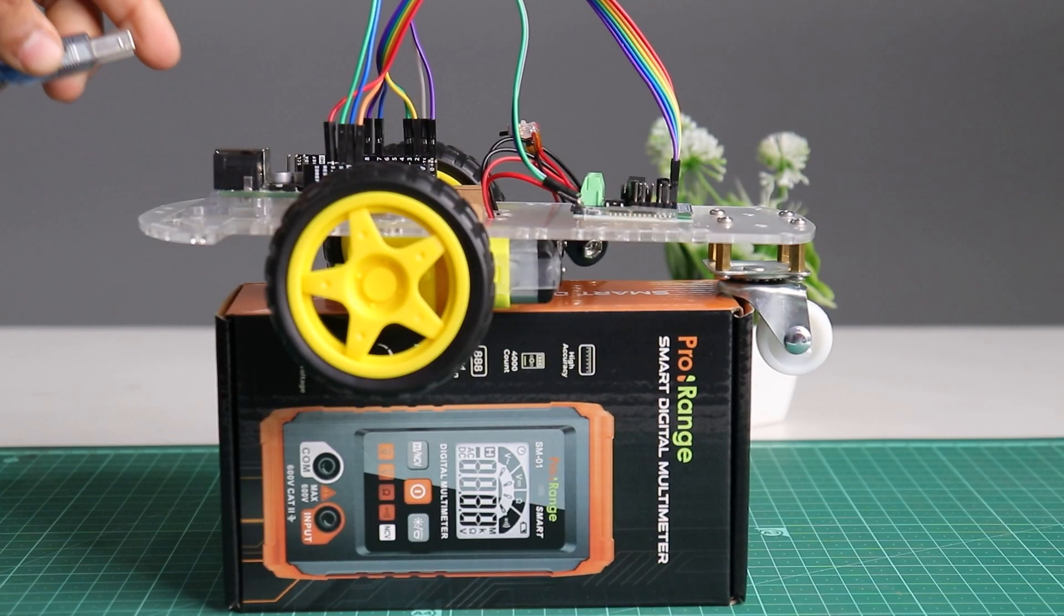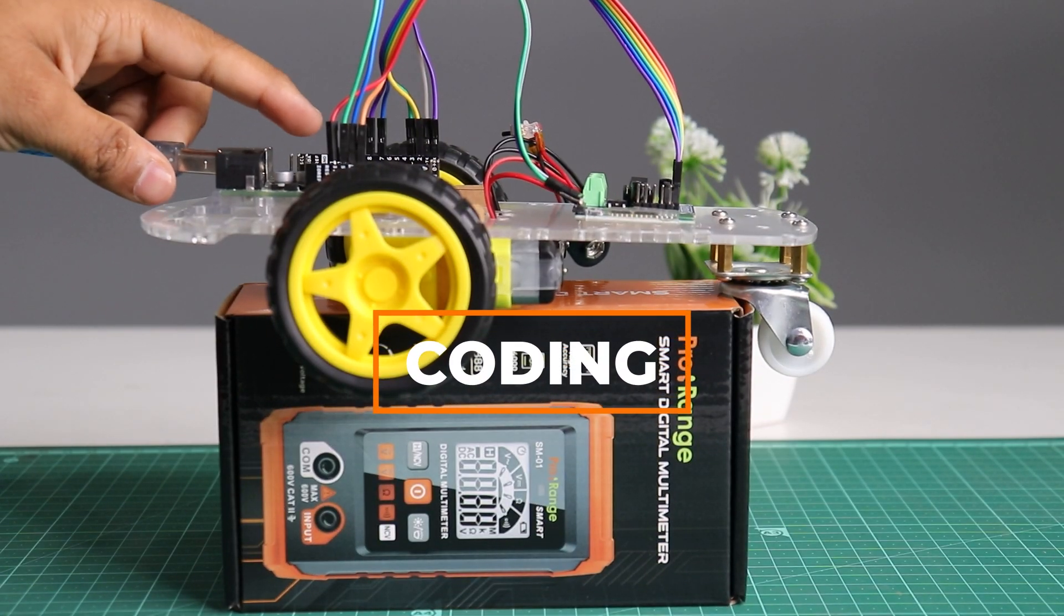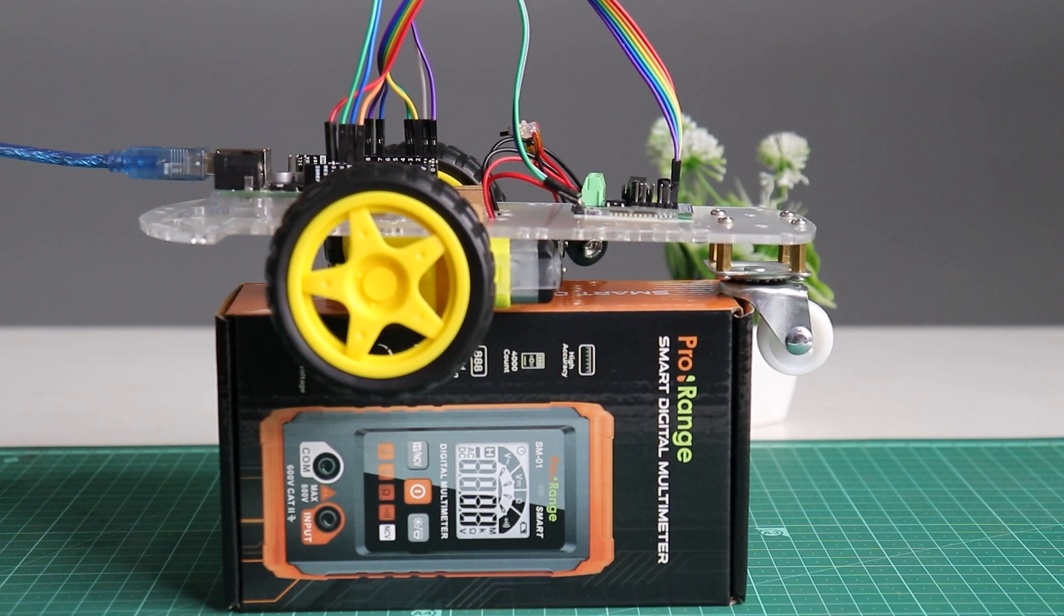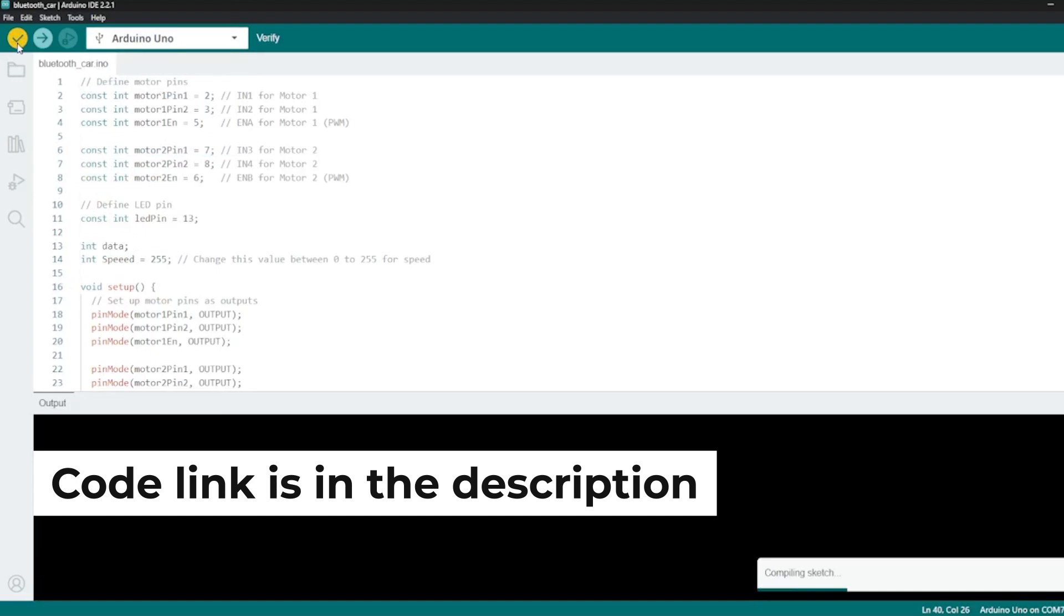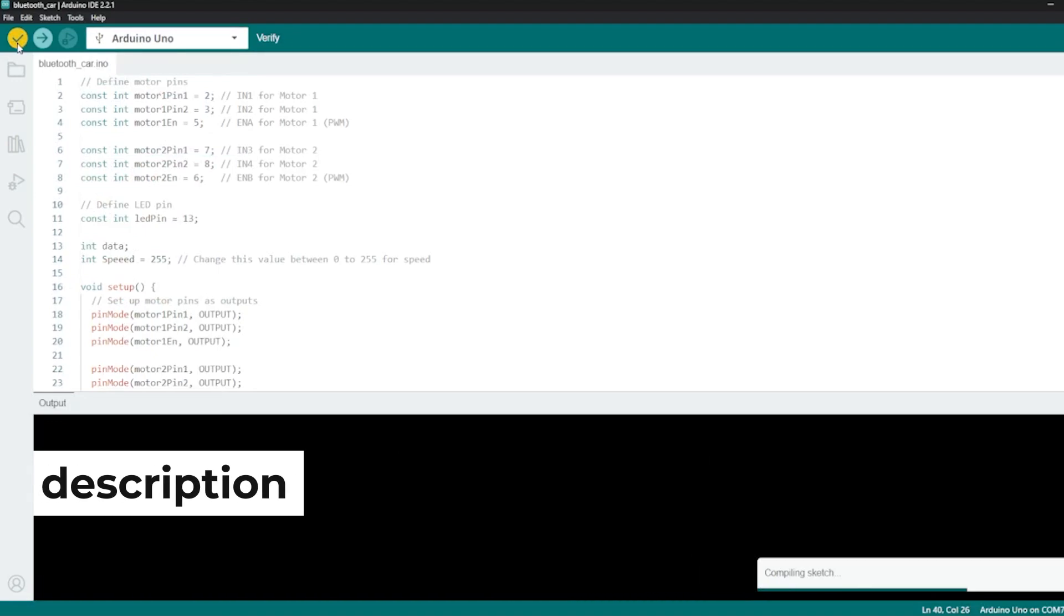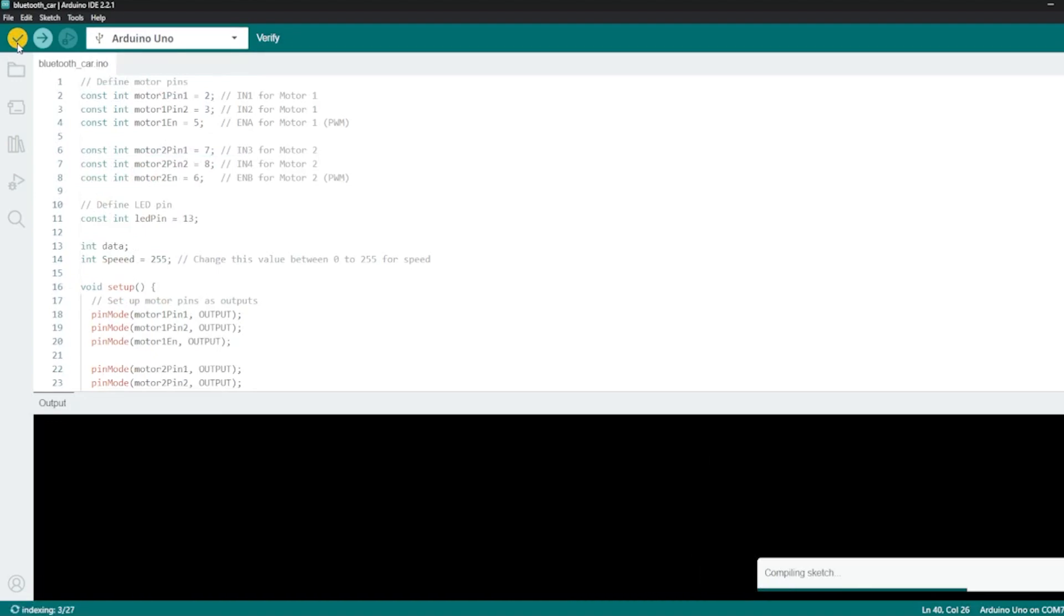Now to the coding part. Connect the Arduino Uno to the PC. Select the correct port and compile the code. Before uploading the code, disconnect the Bluetooth module to avoid any upload failure or error. Upload the code to the Arduino.